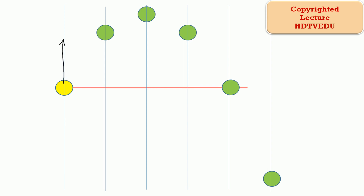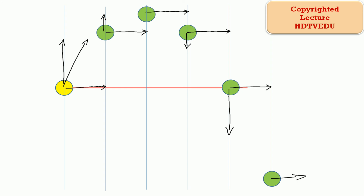Here is our vertical velocity vector, and here is our horizontal velocity vector. The object has a velocity that points in that direction. The horizontal velocity remains the same; only the vertical velocity has gone down in value. The horizontal velocity remains the same. The vertical velocity at the maximum height will be 0. The horizontal velocity remains the same, and the vertical velocity is now reversed. The horizontal velocity remains constant throughout.